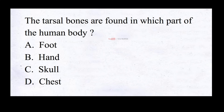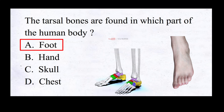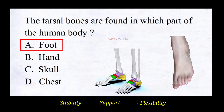The tarsal bones are found in which part of the human body? A. Foot, B. Hand, C. Skull, D. Chest. And the correct answer is A. Foot. Tarsal bones are found in the foot. The tarsal bones are responsible for providing stability, support, and flexibility to the foot, enabling various movements such as walking, running, and jumping.